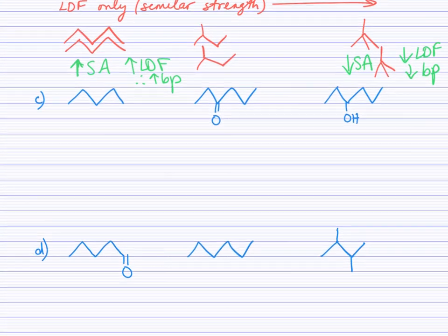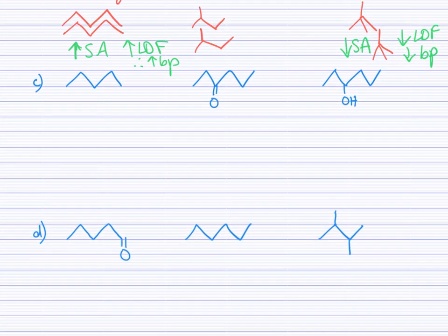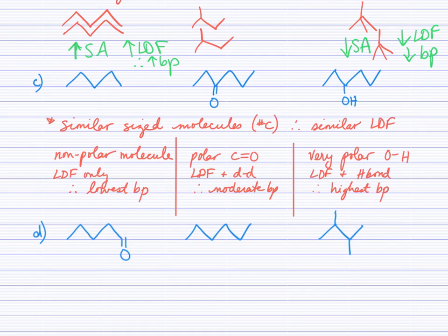Next example, part C. Give this a shot. In analyzing these structures, first thing to notice is that the hydrocarbon chains are all similar length. Because they're similar lengths, the LDF forces are going to be similar, and so we're looking really for the structural features that are different in these three molecules in order to see how those might impact the boiling point.